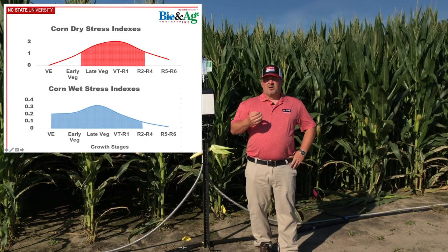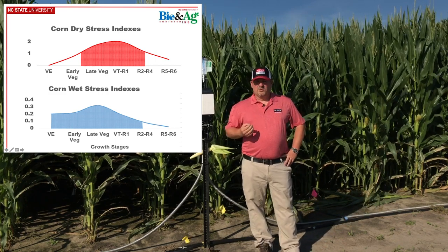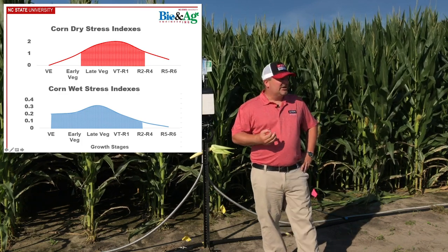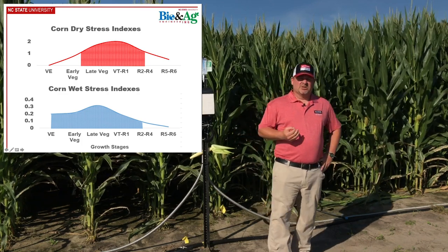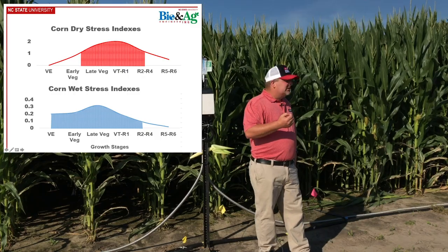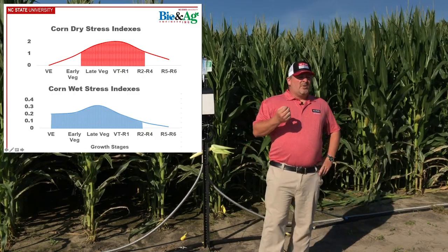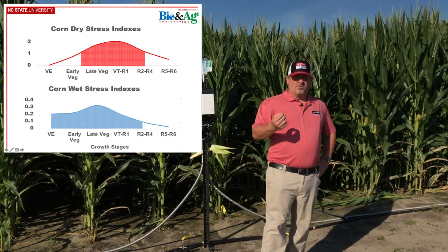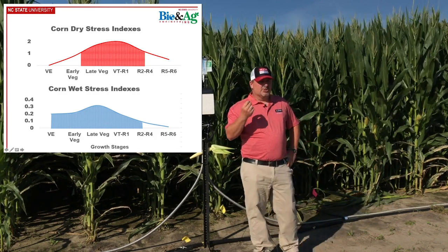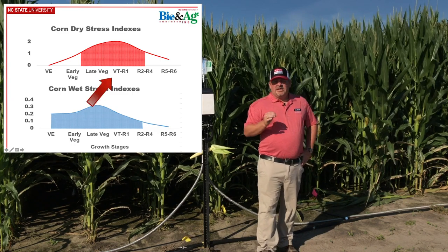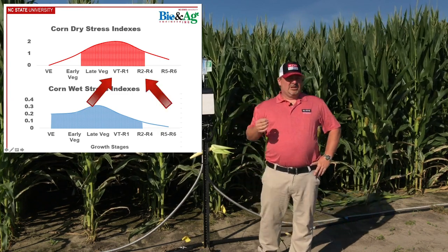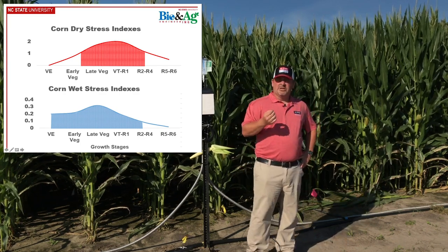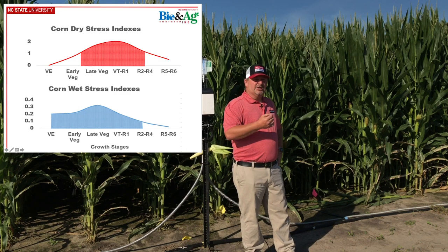Looking at dry stress in corn — and in the last couple weeks at this site we've seen some significant dry stress, even with as much rain as we've had in Eastern North Carolina this year — typically, if we're going to manage water, we're going to get the greatest yield issues occurring between about VT and R2 to R3. That's what we're seeing on the top plot. So if we're going to irrigate, we need to do a really good job of managing water during that period to ensure good yields.